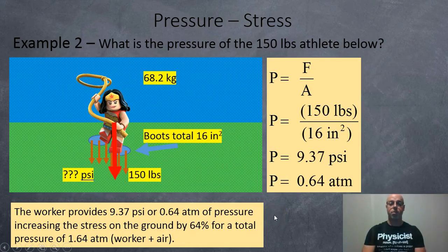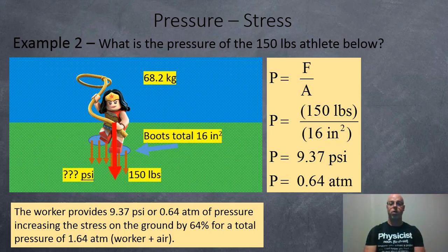Okay, so here's another example. In this case here we're going to use imperial units. So here we've got an athlete with a 68.2 kilo mass. So we're going to multiply that by 2.2 pounds per kilo, and this person weighs 150 pounds. And so they've got some boots on with a total surface area of 16 square inches between the boots and the ground. So we're going to make some calculations here. So pressure is force over area, 150 pounds divided by 16 square inches, that's 9.37 psi.